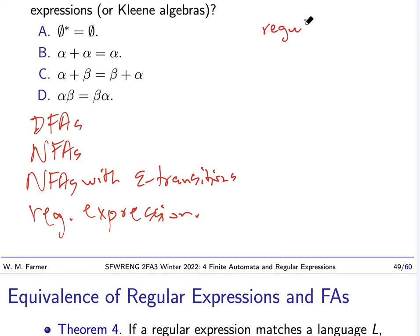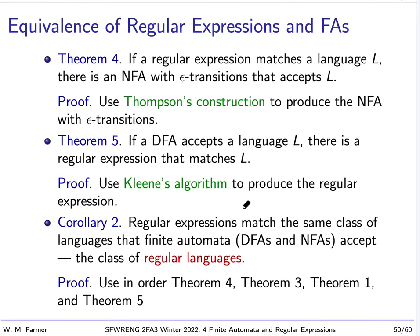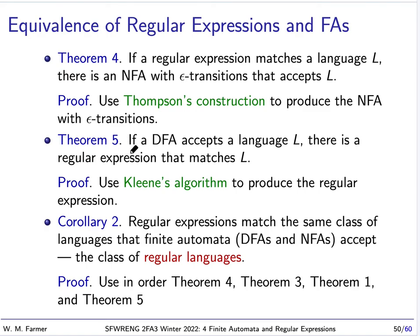If we have a regular expression, we can go to an equivalent NFA with epsilon transitions using Thompson's construction. Then theorem five says: if we have a DFA that accepts the language L, then there is a regular expression that matches L, using Kleene's algorithm. So with these theorems and previous ones, we know that regular expressions map the same class of languages as finite automata. Regular expressions are called regular expressions because they denote regular languages.